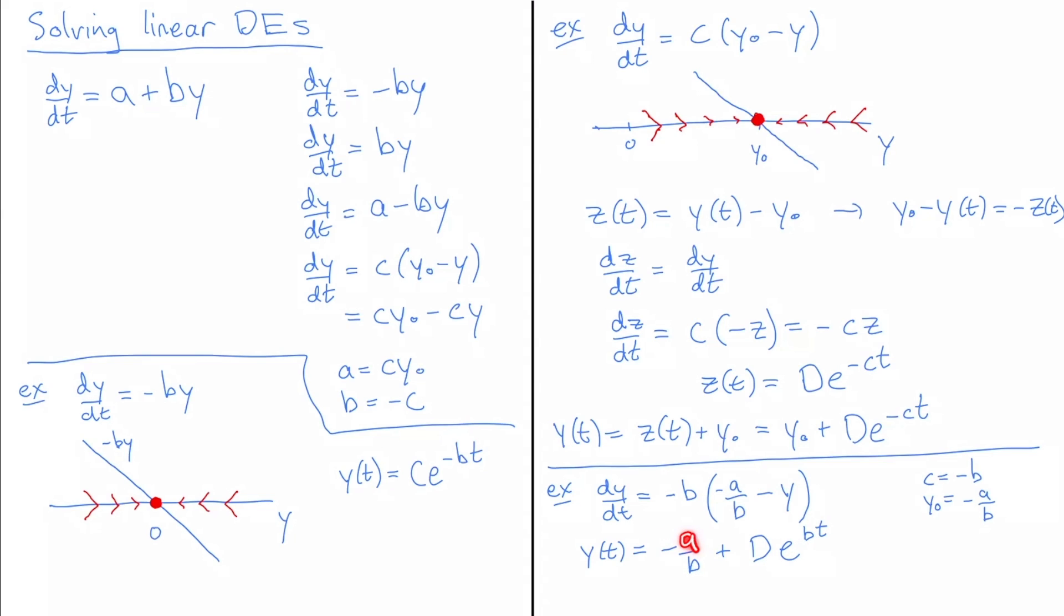Now if a is positive and b is negative, so this is negative exponential decay, this quantity will be a positive steady state. And if it's not, if a is negative and b is negative, then it will be a negative steady state. For b negative, minus a over b is a stable steady state. And if b is positive, then we have exponential growth away from it, and it'll be unstable.